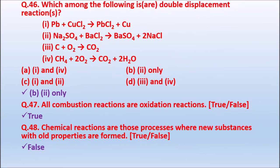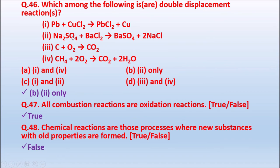Question 46: Which among the following is a double displacement reaction? Option A: Pb + CuCl₂ → PbCl₂ + Cu. Option B: Na₂SO₄ + BaCl₂ → BaSO₄ + 2NaCl. Option C: C + O₂ → CO₂. Option D: CH₄ + 2O₂ → CO₂ + 2H₂O. The correct answer is Option B — sodium sulphate reacts with barium chloride to give barium sulphate plus 2NaCl. That is the double displacement reaction.